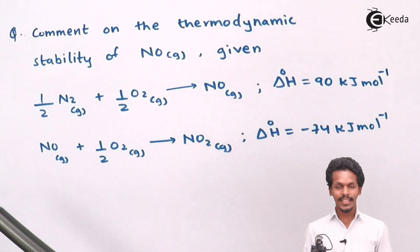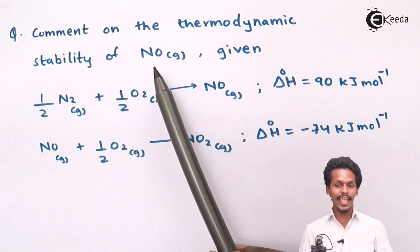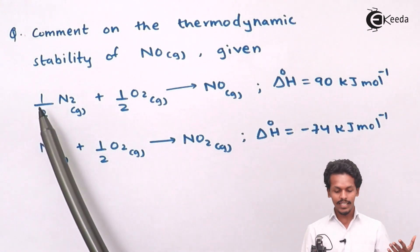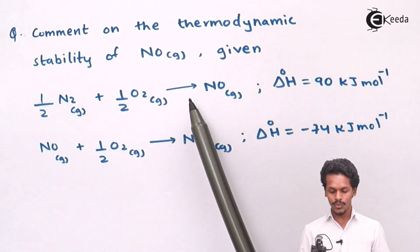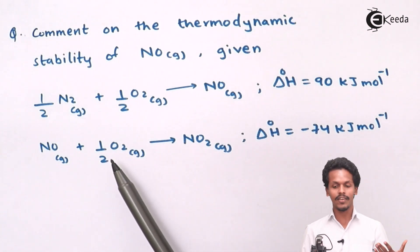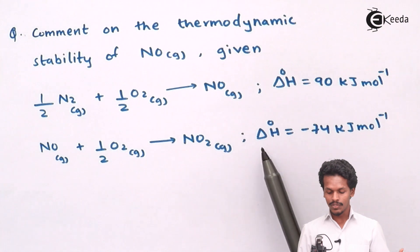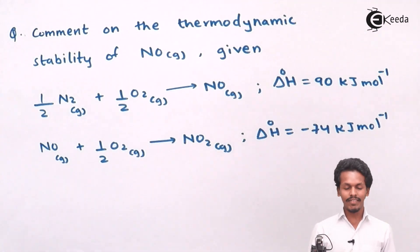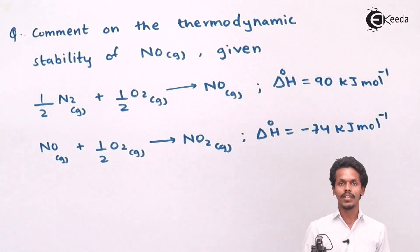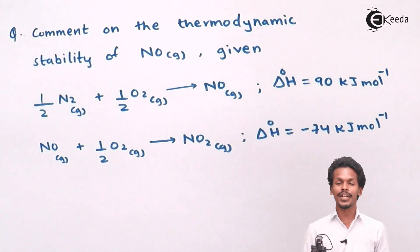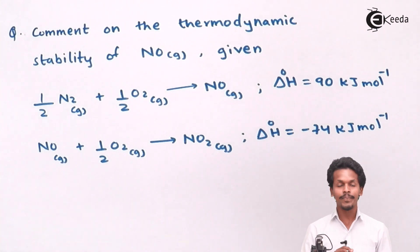This is the reaction they have provided to us. We have to comment on the thermodynamic stability of NO gas. In the first reaction, half N₂ plus half O₂ gives NO, and the ΔH⁰ is given as +90 kJ/mol. In the second reaction, NO reacted with half mole of O₂ gives nitrogen dioxide, where ΔH⁰ is given as −74 kJ/mol. We have to predict whether each reaction is thermodynamically stable and spontaneous.